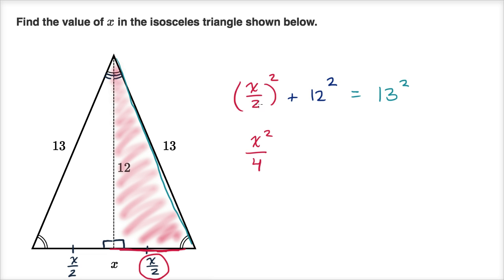that's just x over two squared, plus 144. 144 is equal to 13 squared, which is 169.